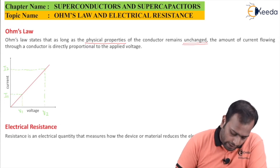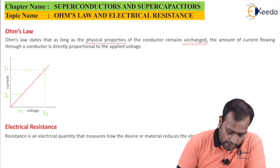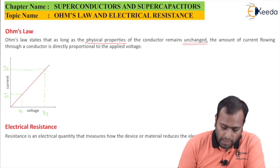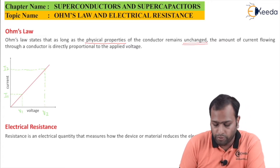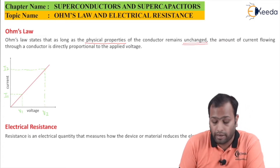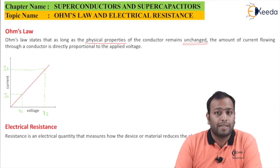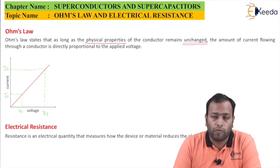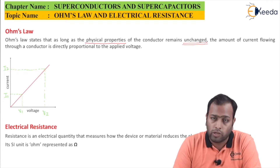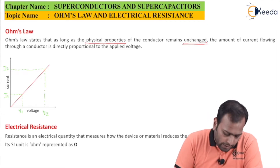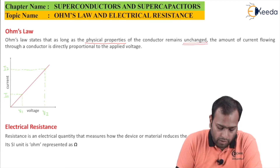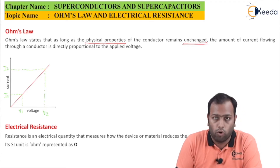Electrical resistance is the electrical quantity that measures how a device or material reduces the electric current through it. This is the amount of resistance offered by a conductor for the flow of charges or current. The SI unit is Ohm, represented by the symbol Ω.